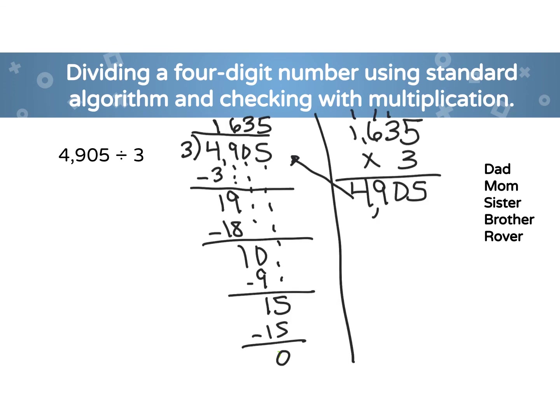When I divided 4,905 by 3, then my answer is 1,635. And so I did the long division. You can see my dotted lines when I had to bring down. And then I used multiplication over here to the right to check my answer.